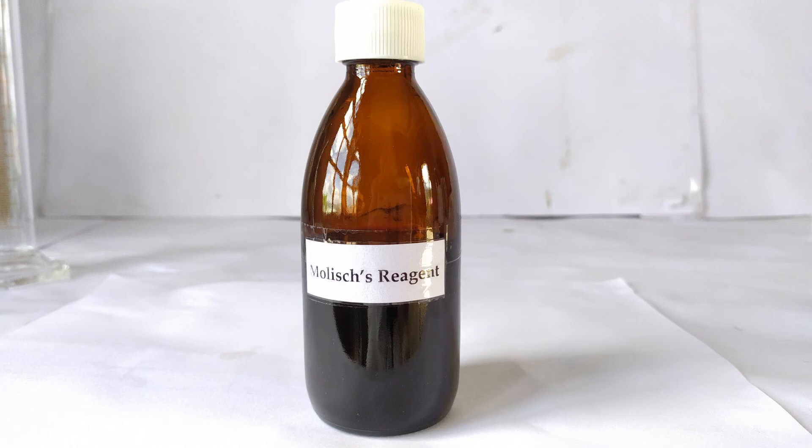You can also take a shortcut method and simply dissolve 5 or 15 grams of alpha naphthol directly in 100 ml of the solvent taken in the beaker.